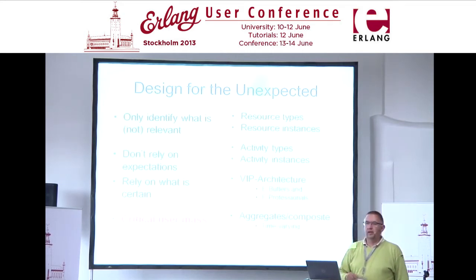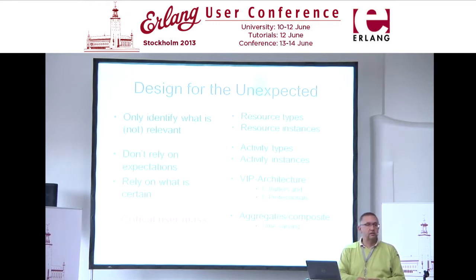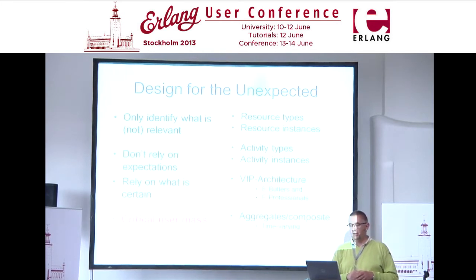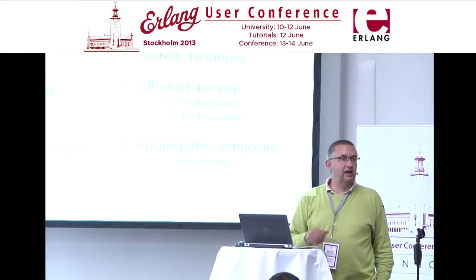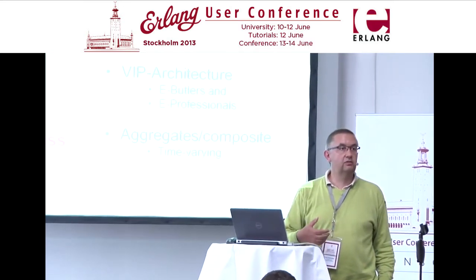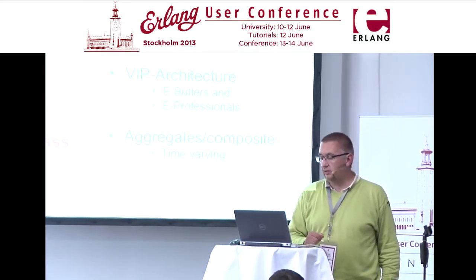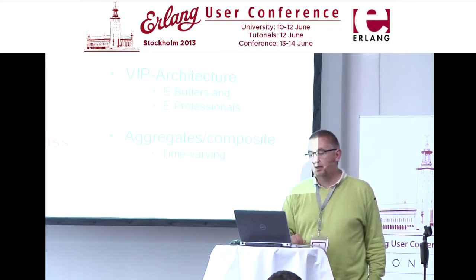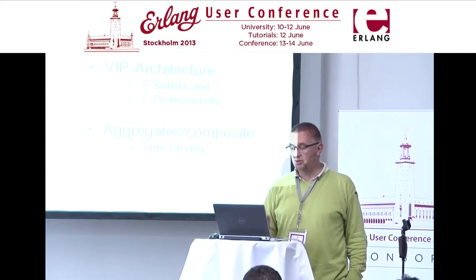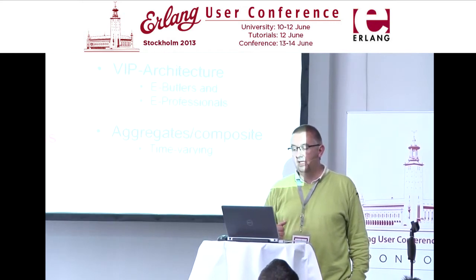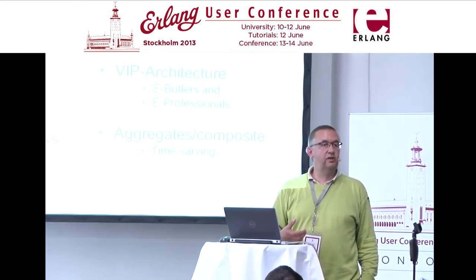Now to the core design principles on how to design for the unexpected. An important criteria is critical user mass. You make artifacts, software components which have a certain complexity and size, and you can only do this in an economically and technically viable way if you have sufficient critical user mass. What we learned is that you have to mirror reality according to a system architecture where you recognize resource types, resource instances, activity types, activity instances, and build them into what I call a VIP architecture.